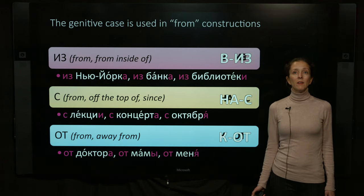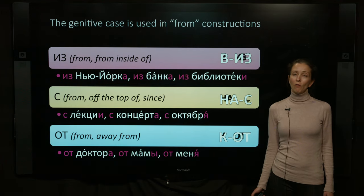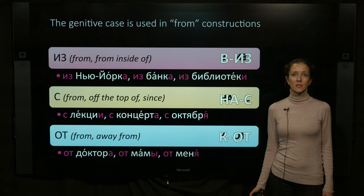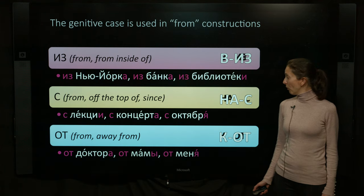Now, remember that из is the opposite of в, с is the opposite of на, and от is the opposite of к.